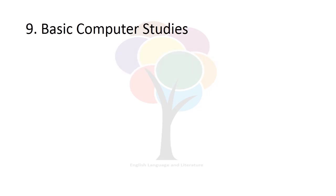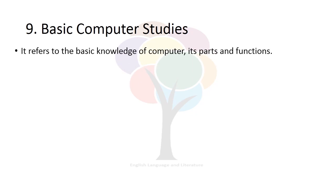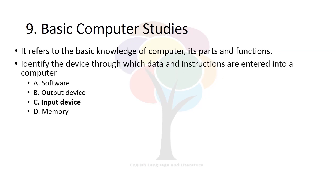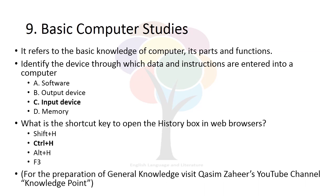The ninth module for general ability is Basic Computer Studies. It refers to the basic knowledge of computer, its powers and functions. In the paper you may be asked to identify the device through which data and instructions are entered into a computer — Software, Output Device, Input Device, or Memory. The right option is Input Device. You may also be asked: 'What is the shortcut key to open the history box in web browsers?' — Shift+H, Ctrl+H, Alt+H, or F3. The right option is Ctrl+H.